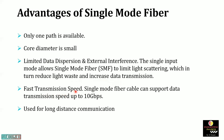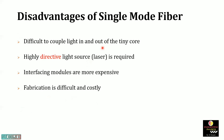Fast transmission speed — light travels along the axis of the core at speeds exceeding 10 Gigabits per second. This type of fibre is used for long distance communication. Disadvantages: it is difficult to couple light in and out of the tiny core because the core diameter is very small. A highly directive light source is required — laser light is used to couple light in single mode optical fibre. Interfacing modules are more expensive and fabrication is difficult, making this type of fibre costly.